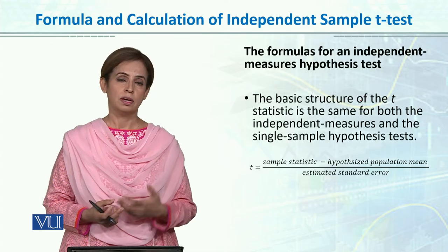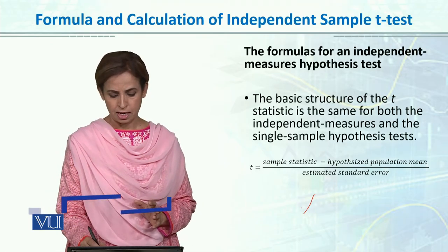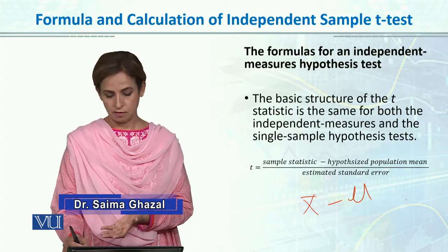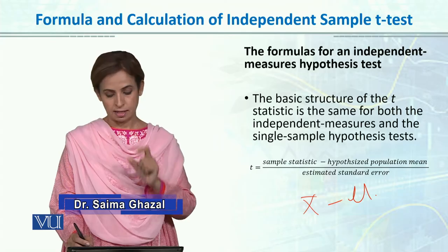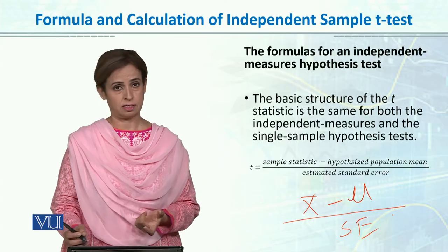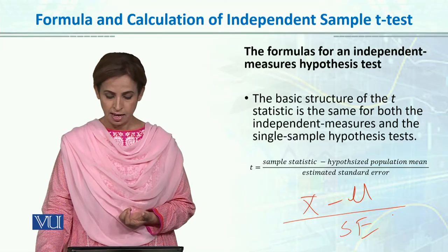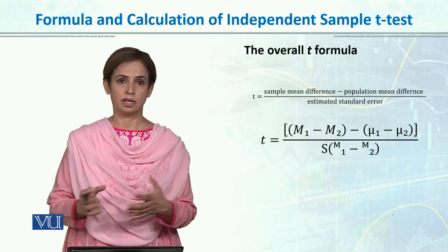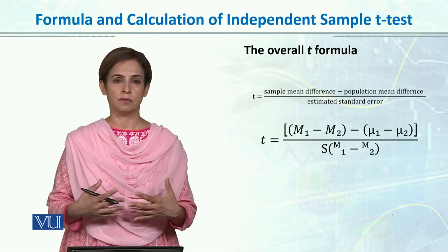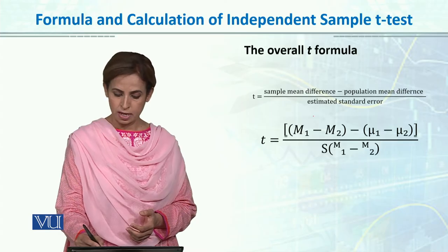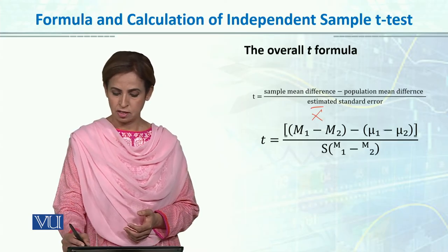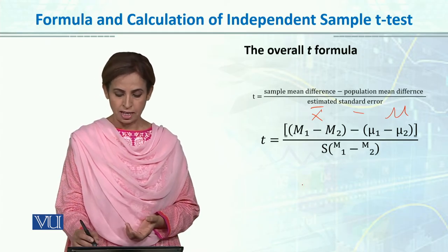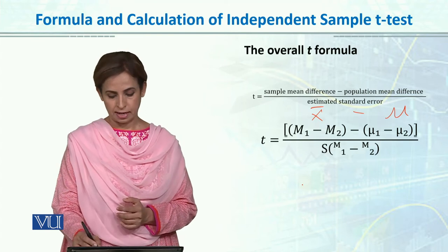The basic formula is the same as we did in one-sample t-test: mean minus mu, where we take the sample value and subtract the population or standard value, then divide by standard error. Same assumption for the independent sample t-test, but the difference is we have two samples - sample one and sample two, or group one and group two, for which we calculate the difference.